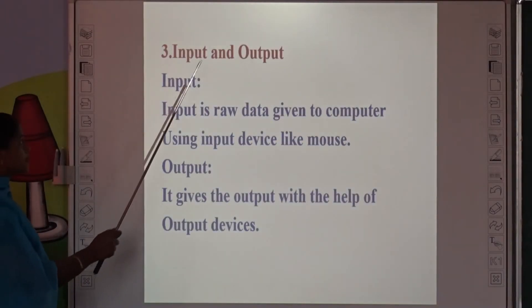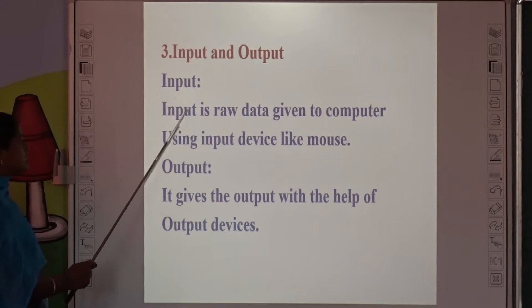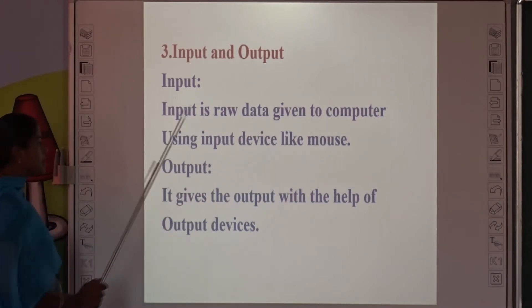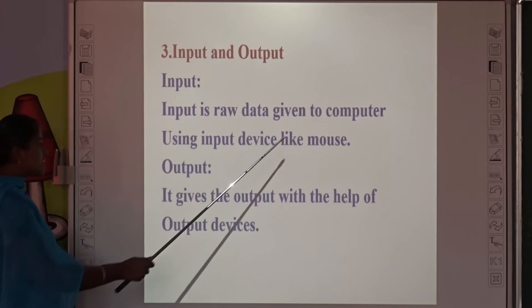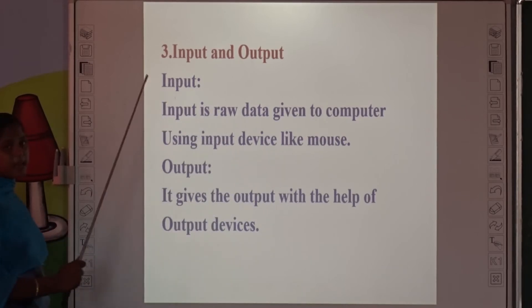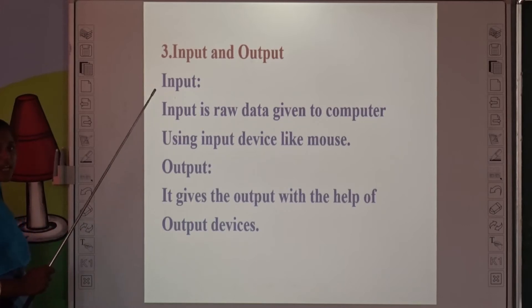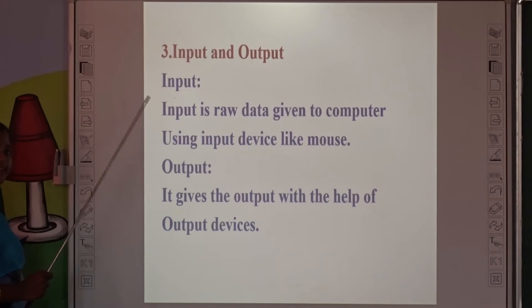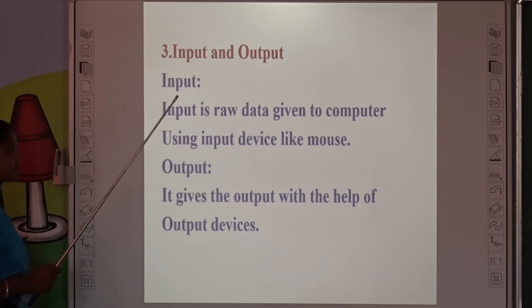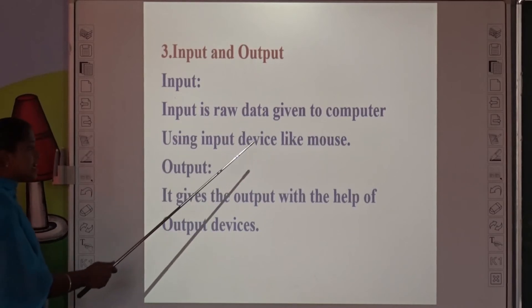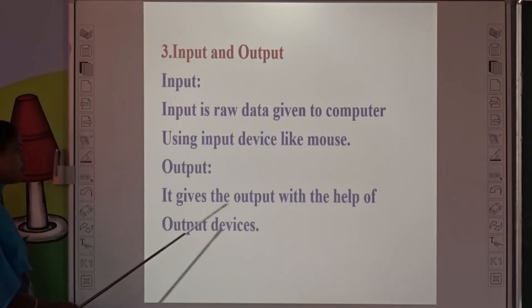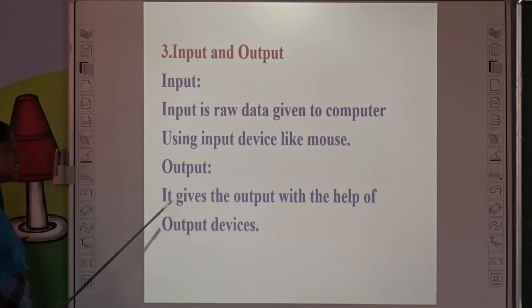Third differentiation: Input and Output. Input is raw data given to the computer using input devices like mouse and keyboard. We give raw data — there is no useful data yet; it gets processed and then the output is displayed. Output is what the computer gives using output devices.